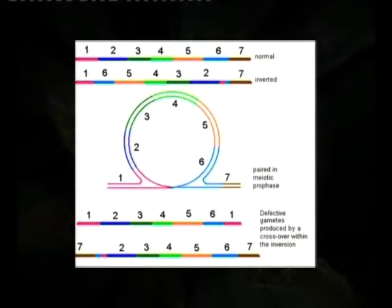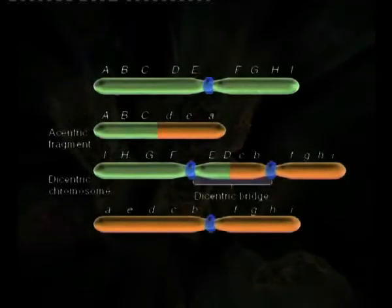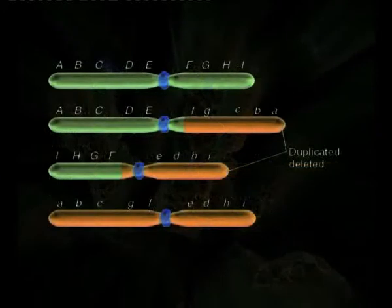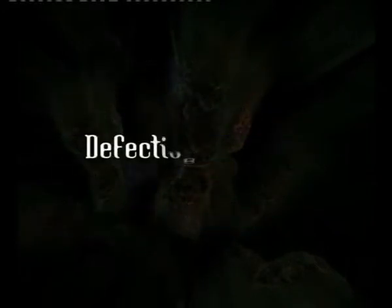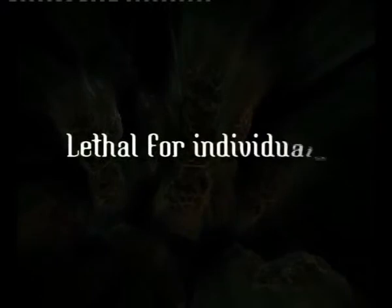Another consequence is the formation of defective gametes during meiosis. These defective gametes do not take part in fertilization at all. If they do take part in fertilization, they will produce defective individuals which may lead to the death of those individuals. With this we conclude today's lecture on inversions — see you next time, thank you very much.